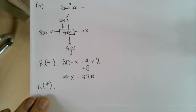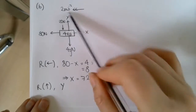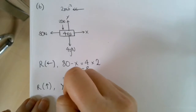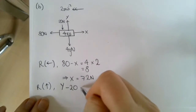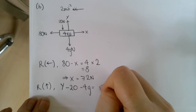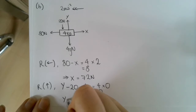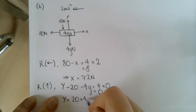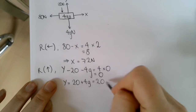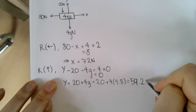Now resolving upwards, the resultant force is Y subtract 20 and subtract 4G — the 20 newtons, although on the same side as Y, is actually acting downwards. That equals mass times acceleration. The upward acceleration is 0, so 4 times 0 equals 0, meaning Y equals 20 plus 4G. Since G equals 9.8, that's 20 plus 4 times 9.8, which equals 59.2 newtons.